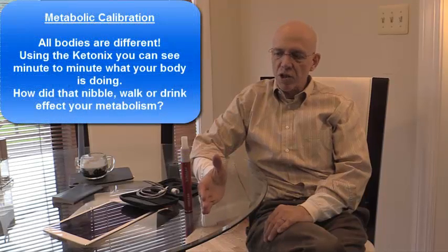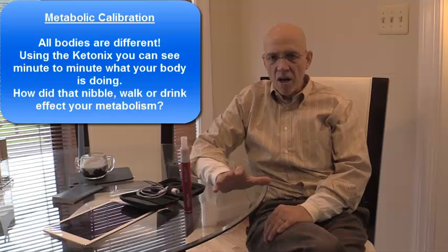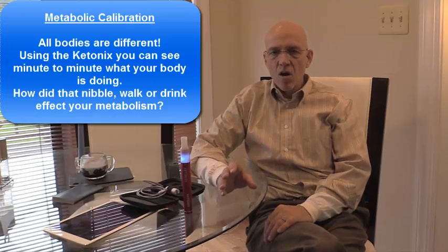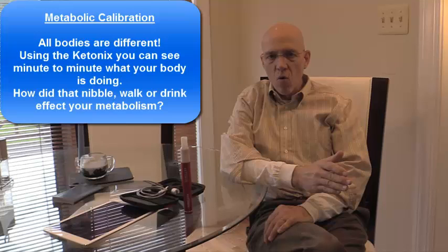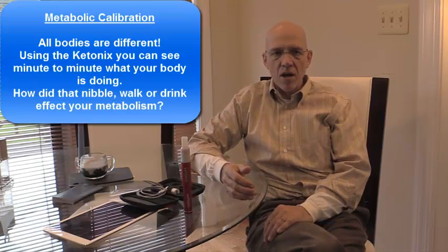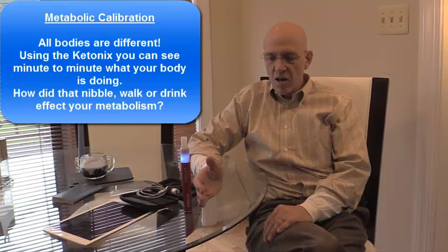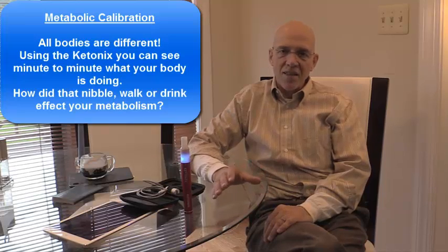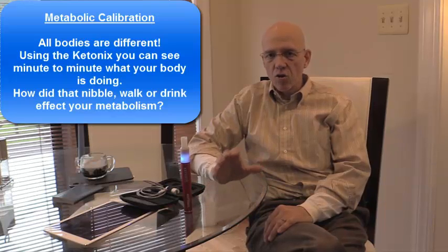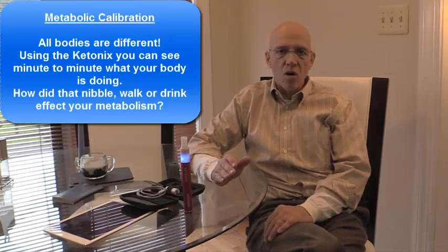Number two is calibration, metabolic calibration. And that's when you actually sit down and you learn, for your body, and everybody's body is different, what gives you high ketones, what gives you low ketones. What impact does a 20-minute walk have? What impact does it have if I go ahead and have a glass of wine versus a beer? What impact does it have if I eat oysters or sardines rather than some beef or some vegetables? That's what you're after. As you see, we're at blue.